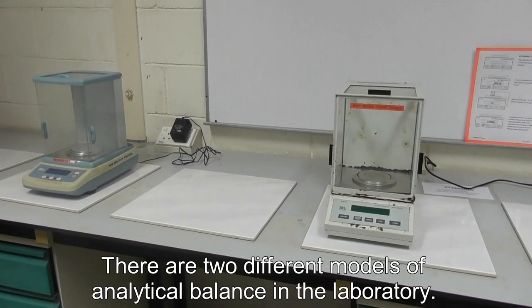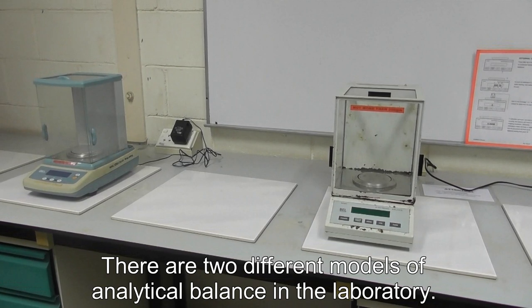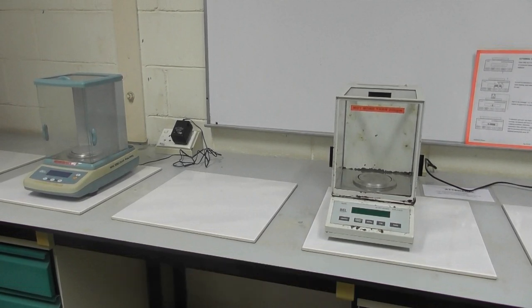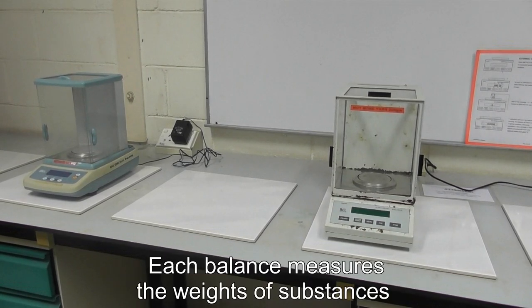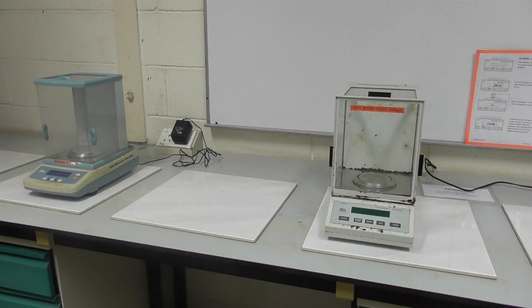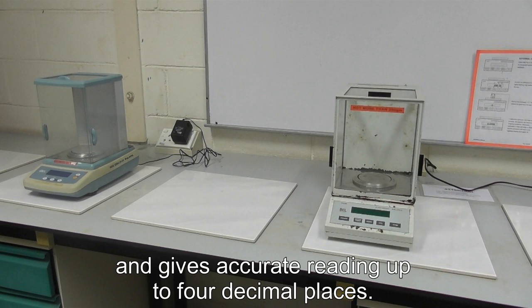There are two different models of analytical balance in the laboratory. Each balance measures the weights of substances or any object below 200 grams and gives accurate reading up to four decimal places.